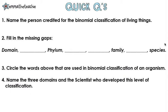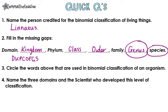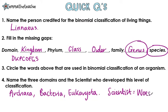Question time! Pause the video, give the questions a go, and press play to go over the answers. Question 1: Name the person credited for the binomial classification of living things. This is Linnaeus. Question 2: Fill in the missing gaps. Start with writing out your mnemonic letters — definitely keep ponds clean or frogs get sick — so K for kingdom, after P is C for class, then O for order, and G for genus. Question 3: Circle the words used in binomial classification — it's always the last two: the genus and the species names. Question 4: Name the three domains and the scientist who developed this level of classification. Archaea, Bacteria, and Eukaryota — and the scientist is Woese.